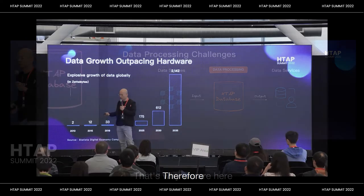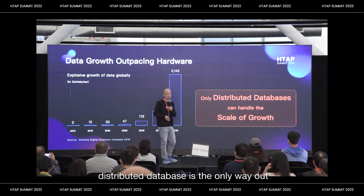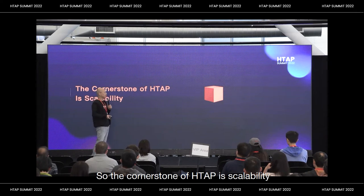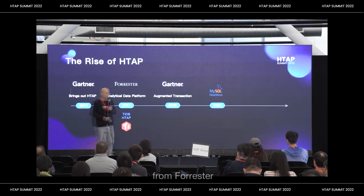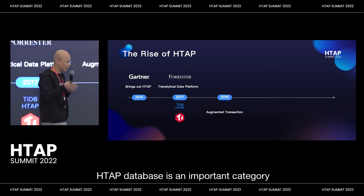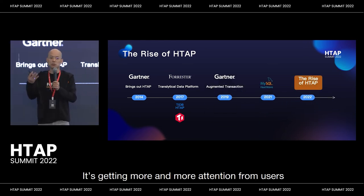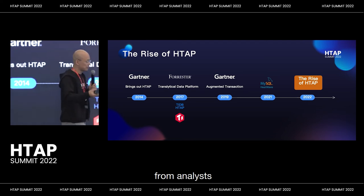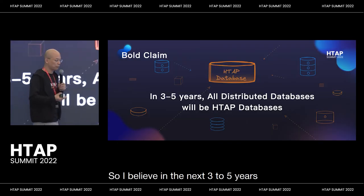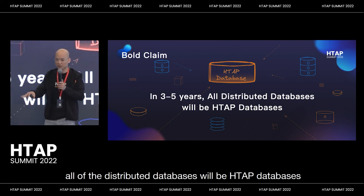That's why we are here. Therefore, a distributed database is the only way out. The cornerstone of HTAP is scalability, according to Gartner and Forrester. But the trend is quite clear: HTAP databases as an important category are getting more and more attention from users, from analysts, from vendors. I believe in the next three to five years, all of the distributed databases will be HTAP databases.